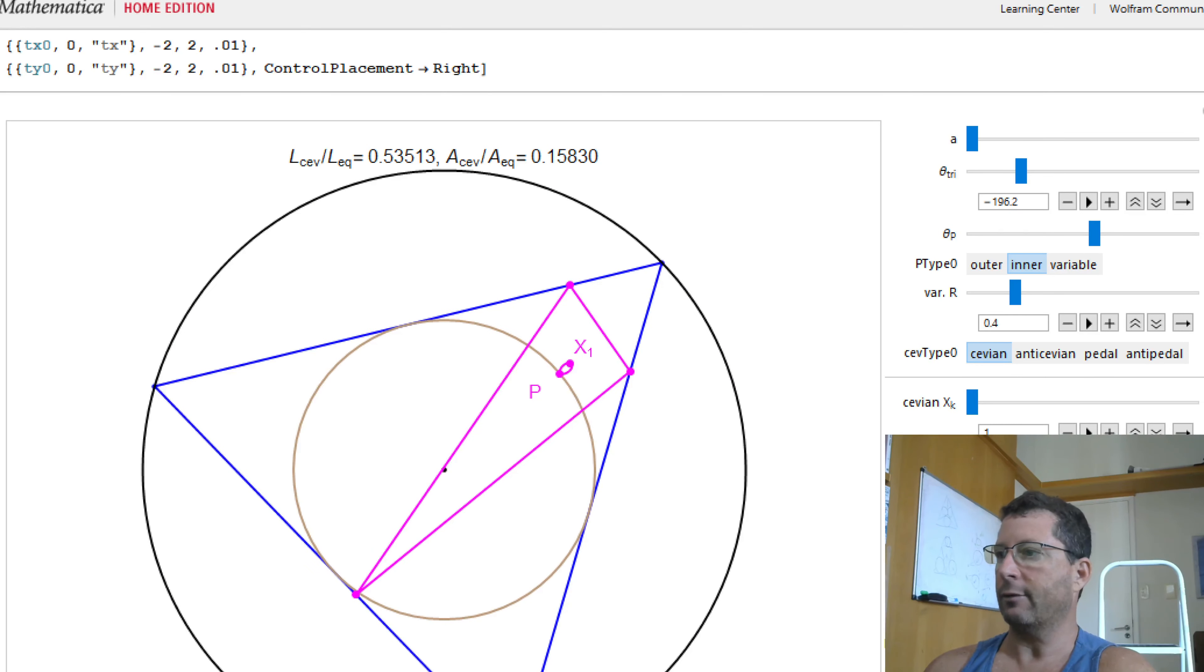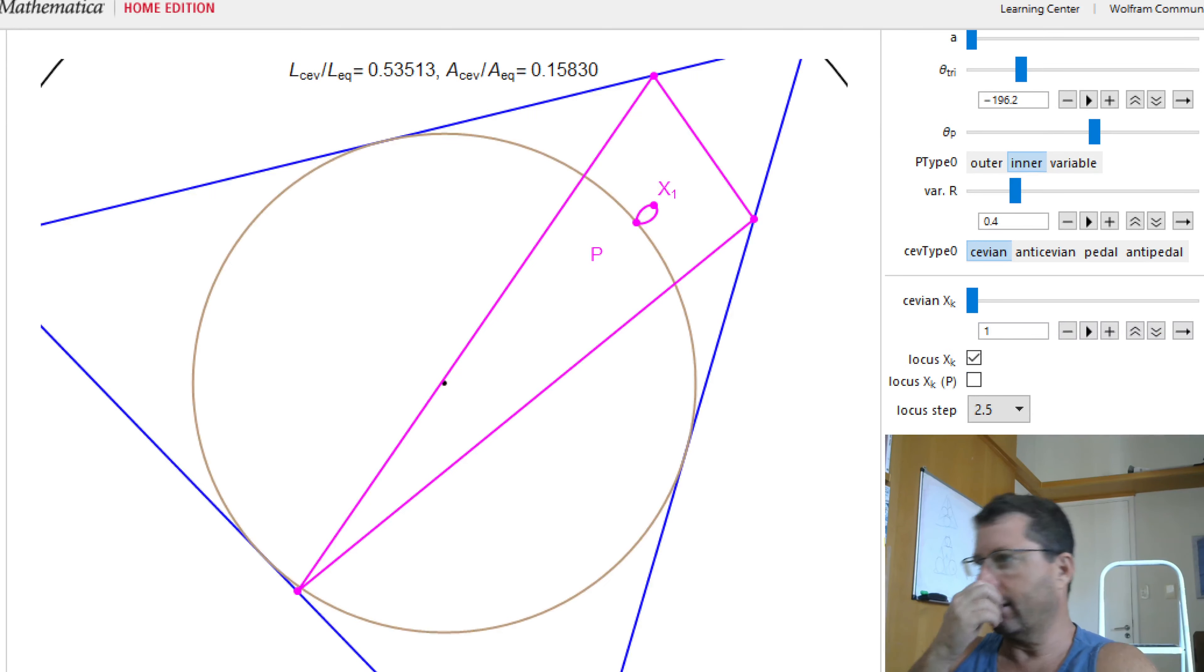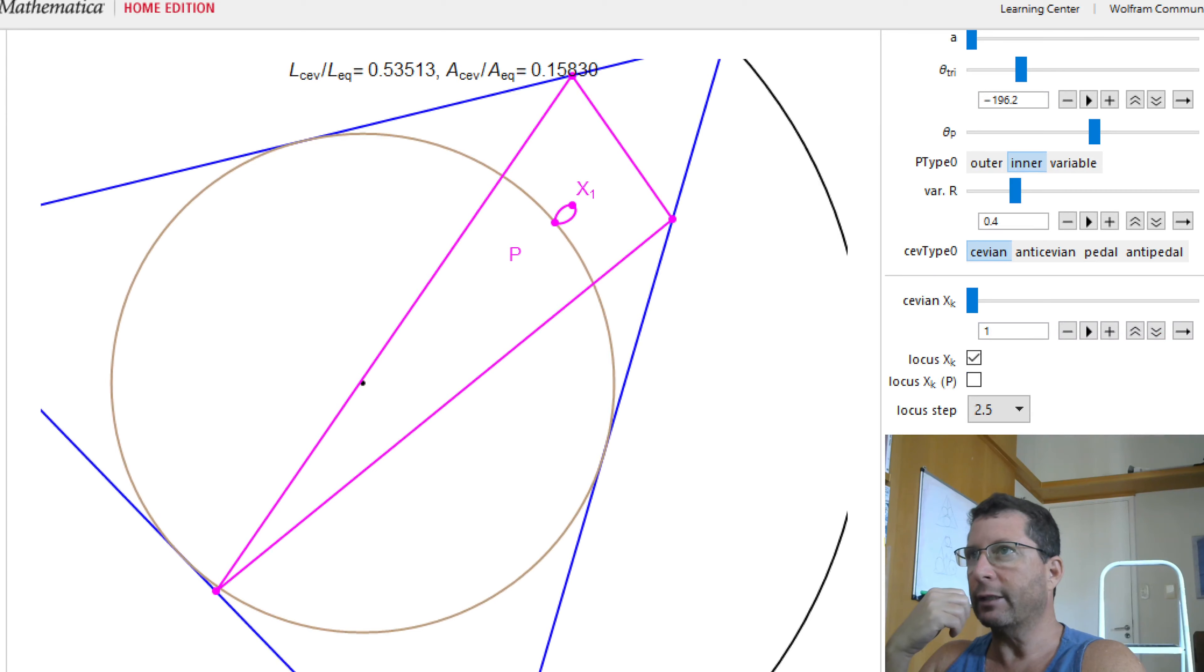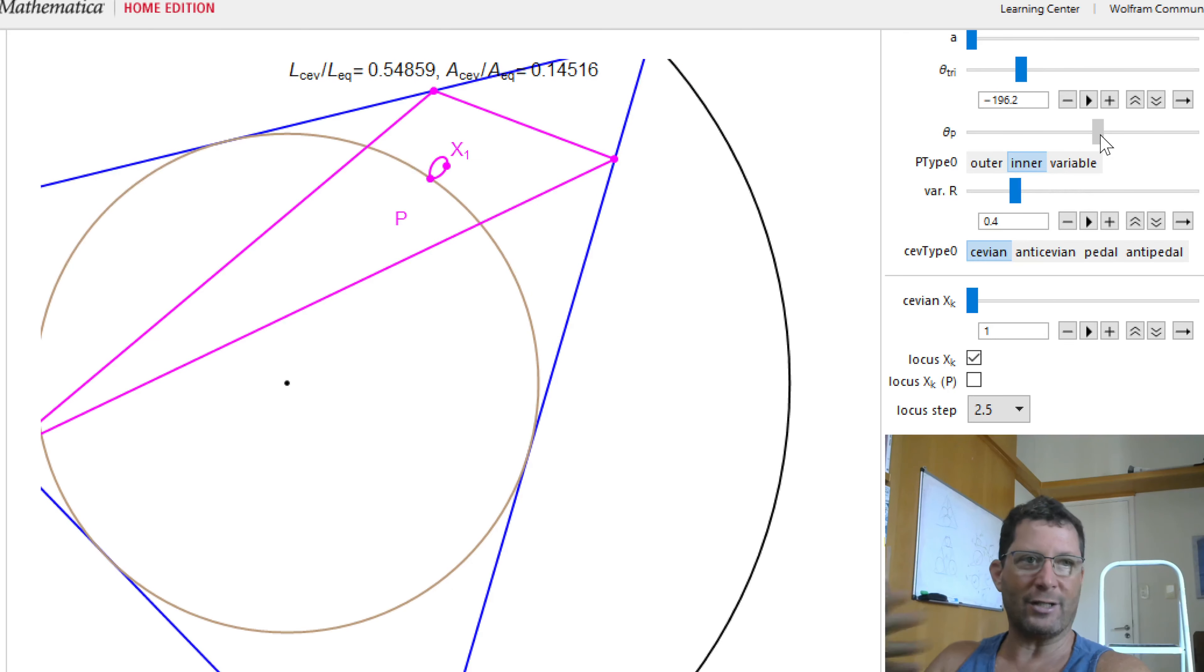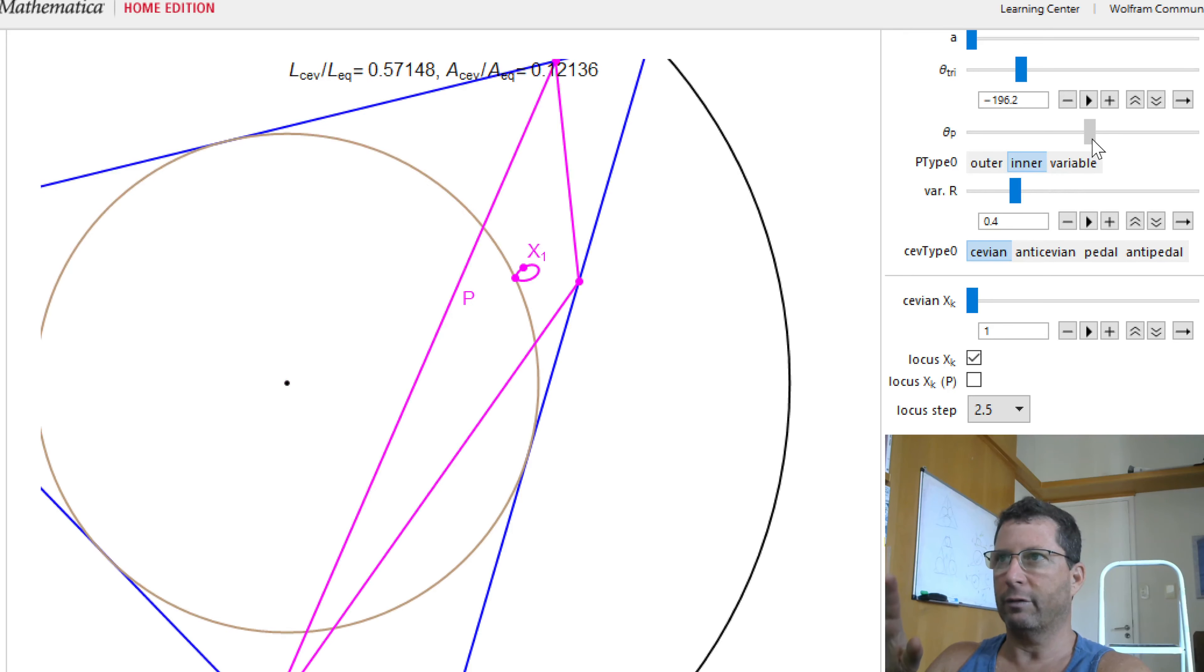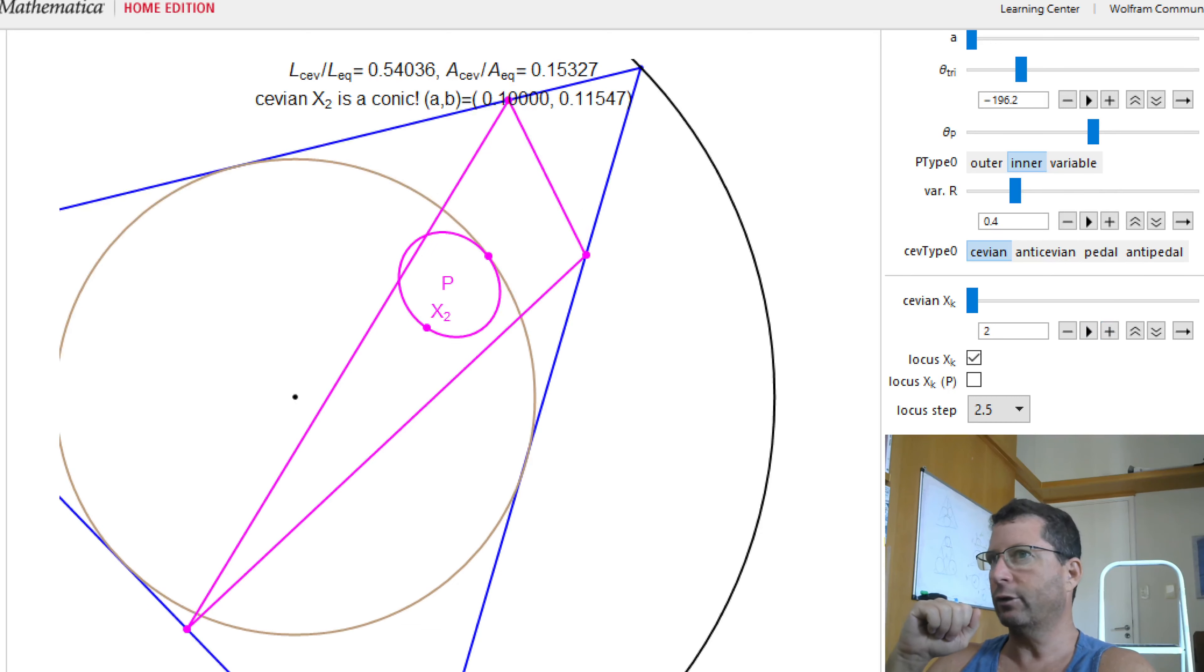And I can play the same game and try to see if this locus is anything interesting. It's turned out to be a pretty small object here and looks like it's still uninteresting. As I move P around, a non-interesting, uninteresting kind of oval. X1, we never expect for it to be very harmonious in any way. So we can actually skip over X1 and let's go straight to X2 and see what happens to X2.